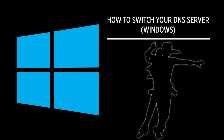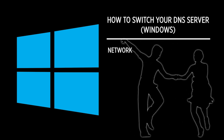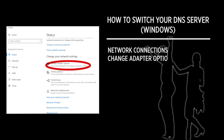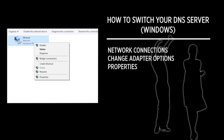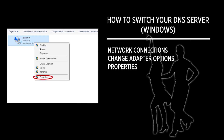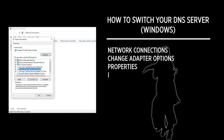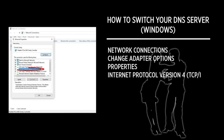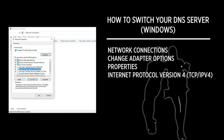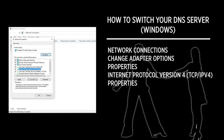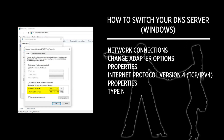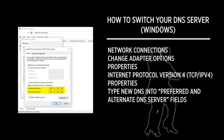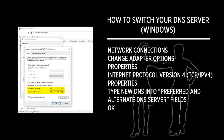Here's how to switch your DNS server. For Windows users, right-click on the Start menu and pull up Network Connections. Now select Change Adapter Options. Right-click on the current network and select Properties from the drop-down menu. Select Internet Protocol Version 4, or TCP/IPv4, and click on Properties. Type the new DNS into the Preferred and Alternate DNS Server fields and click OK.